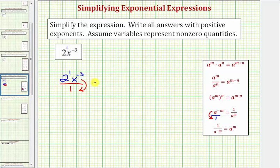So because the two has an exponent of positive one, the two stays in the numerator, and we move x to the power of negative three down to the denominator, it becomes x raised to the power of positive three. This expression is now considered simplified.